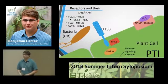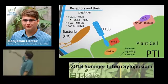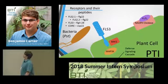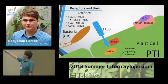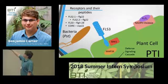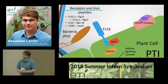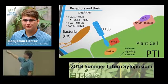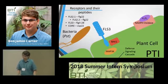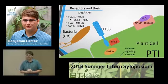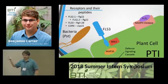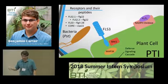In my project, I examined four PTI receptors: FLS2.1, FLS2.2, FLS3, and COR. Due to a gene duplication event, FLS2.1 and FLS2.2 both detect flg22. FLS3 detects flg28. Both flg22 and flg28 are peptides involved in making up flagellum. COR detects flg22 or cold shock protein. From now on I'll focus primarily on FLS3 for the sake of time, although I did screen the other three proteins as well.